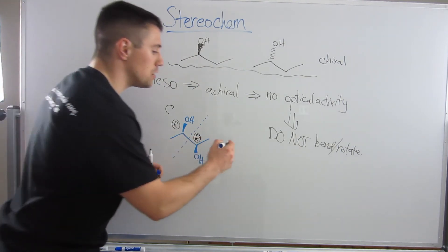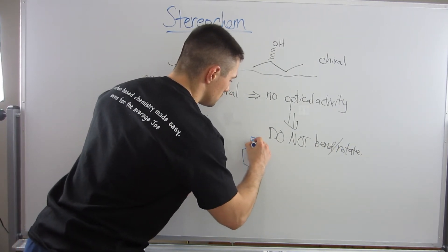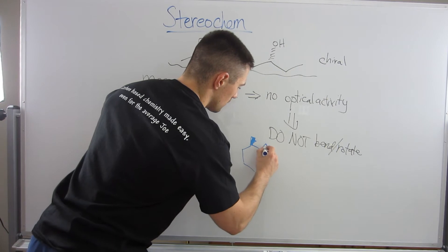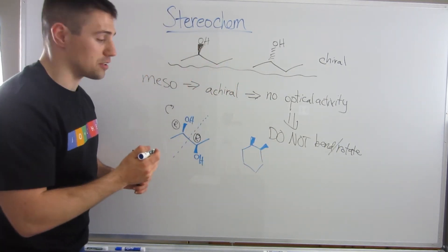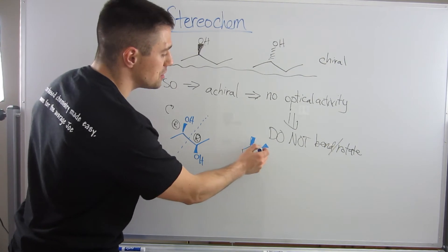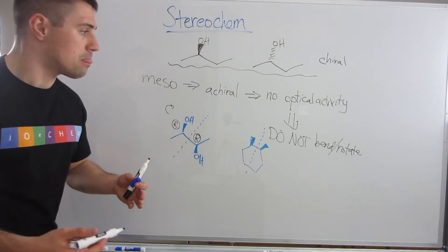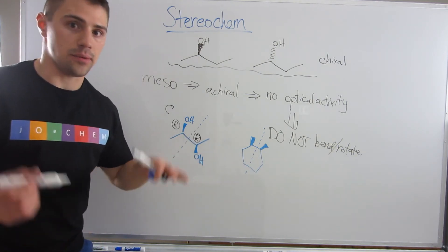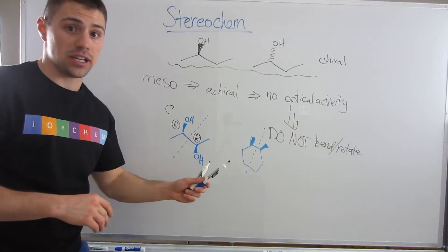And if I even drew you another example, this structure also has two stereocenters. I can assign R and S at this position and this position. However, there's a plane of symmetry. So this structure would also not exhibit optical activity.